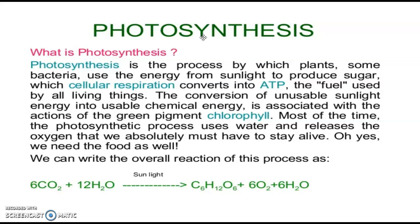An example of a photochemical process is photosynthesis, in which chlorophyll is a pigment acting as a photosensitizer. Within the plant body, chlorophyll forms ATP and is involved in food production. In the reaction, 6 molecules of carbon dioxide and 12 molecules of water, in the presence of sunlight, are converted into glucose (C₆H₁₂O₆) plus 6 molecules of oxygen, plus 6 molecules of water as a byproduct. Here the product is glucose and oxygen is the byproduct. This is the best example of a photosensitization reaction.